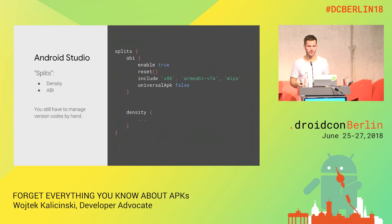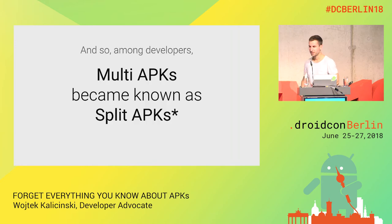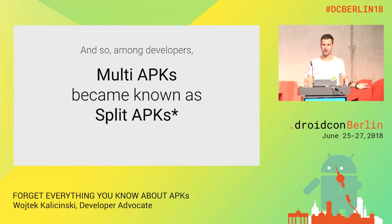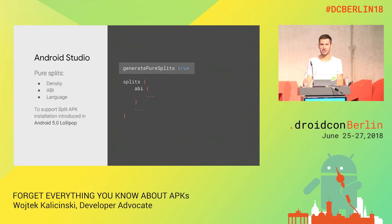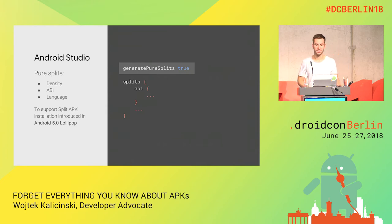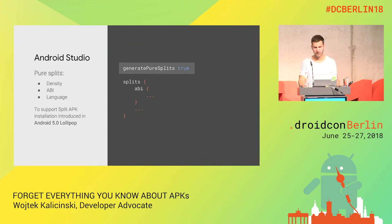Notice that even though the command is called splits, I used quotes. When Android Studio introduced the splits directive in the Gradle file, multi-APK became known among developers as split APKs because of the name of the directive — but that is completely wrong. In order to actually generate what we properly call split APKs, there was for a long time a hidden directive in Android Studio called generatePureSplits, which worked together with the splits command. The problem was we never talked about it because it wasn't supported by the Play Store. It was supported from Android 5 Lollipop by the framework.